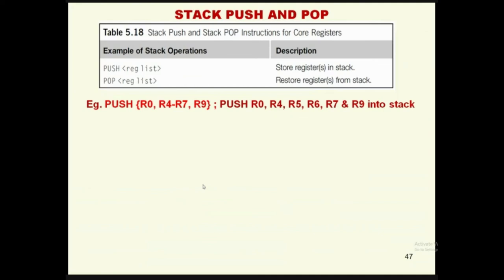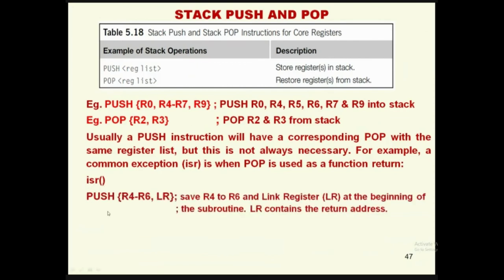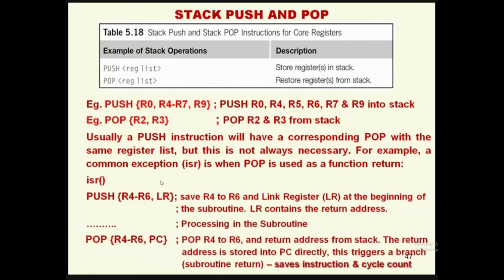For example, PUSH {R0, R4-R7, R9} pushes the contents of registers R0, R4, R5, R6, R7, and R9 — six registers — to the memory locations pointed by the stack pointer. POP {R2, R3} pops the content of the memory location pointed by the stack pointer into registers R2 and R3. Usually a PUSH instruction has a corresponding POP with the same register list, but this is not always necessary — a common exception is when POP is used as a function return.